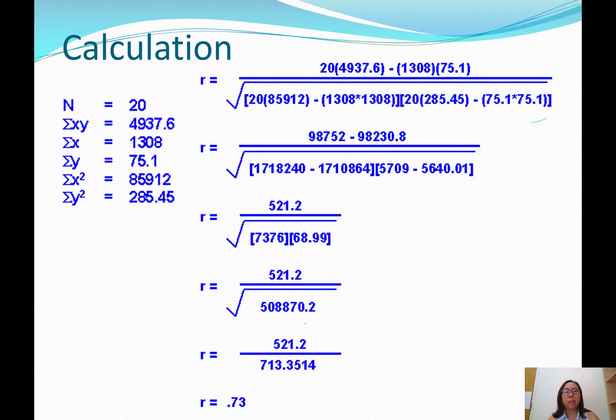Now for the denominator, we calculate 20 times 85912, and then 1308 squared, and subtract, which gives you 7376. In the second set of brackets, you've got 20 times 285.45, which becomes 5709, and then 75.1 squared. Do that subtraction, that becomes 68.9 now. So now it's more manageable. You have two numbers that you want to then multiply because brackets are like parentheses. Parentheses means to multiply. So you have this huge number that is very different from the numerator that should be a reminder that there's a square root that still needs to happen. When you square root this gigantic number in the denominator, it becomes much more small, 713.3514, and similar to the numerator.